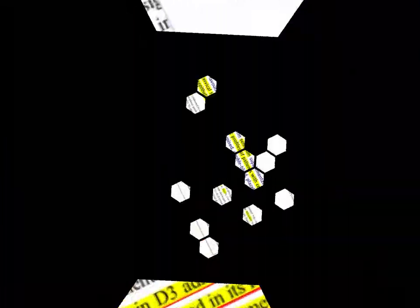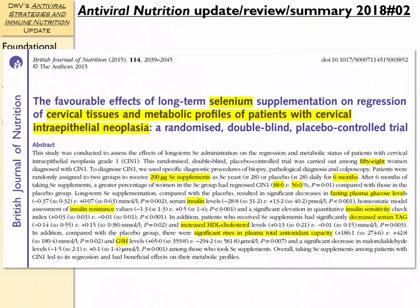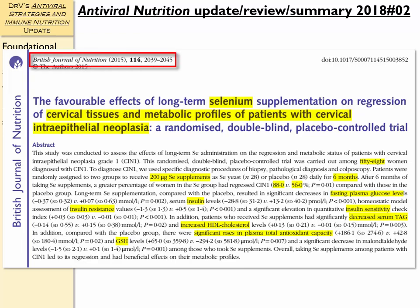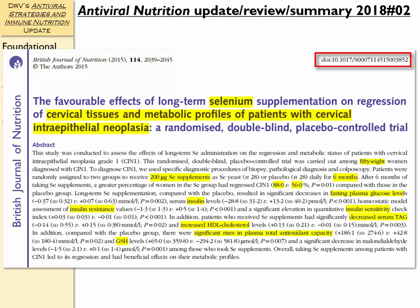We're going to maintain this theme talking about nutrition against HPV infection and its consequences today for Antiviral Nutrition Update 2018 number 2. We're going to look at this article from the British Journal of Nutrition 2015: The Favorable Effects of Long-Term Selenium Supplementation on Regression of Cervical Tissues and Metabolic Profiles of Patients with Cervical Intraepithelial Neoplasia. This is a randomized double-blind placebo-controlled trial, with the citation and digital object identifier provided.